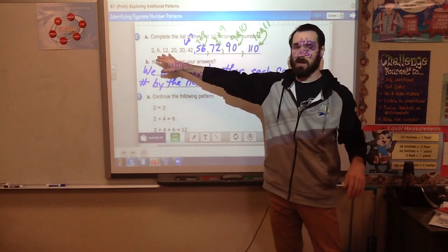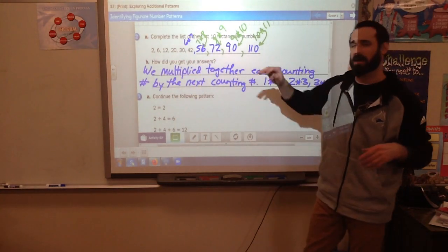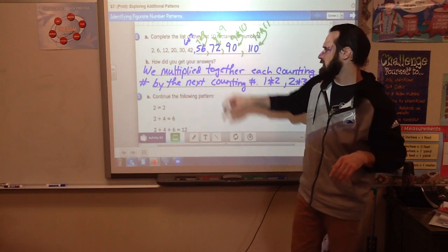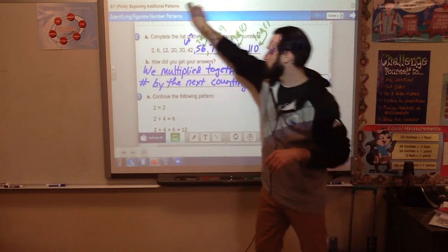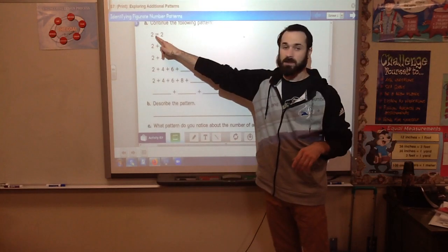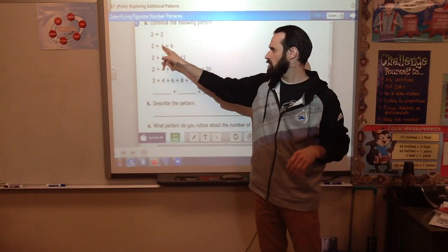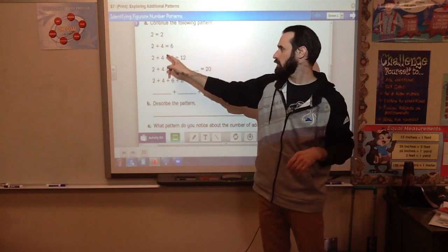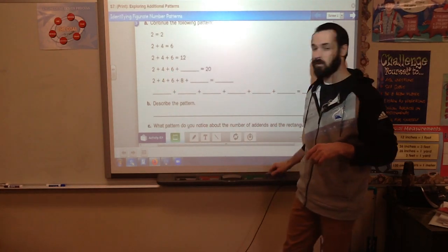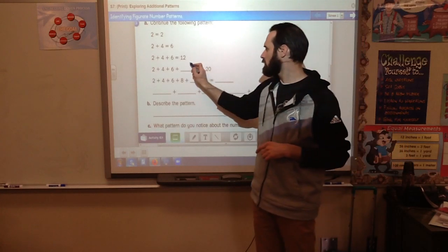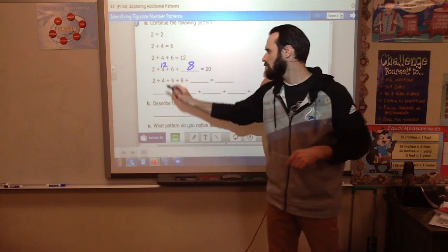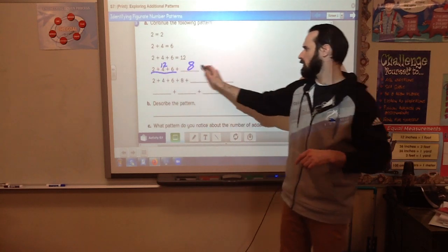Now keep these numbers in mind. You have these written down: 2, 6, 12, 20, 30, 42, 56, 72. Because now we're going to look down here. 2 equals 2. 2 plus 4 is 6. 2 plus 4 plus 6 is 12. 2 plus 4 plus 6, what would come next? 8. And that makes sense because we know that 2, 4, and 6 together make 12. So this is 12, and 12 plus 8 is 20.